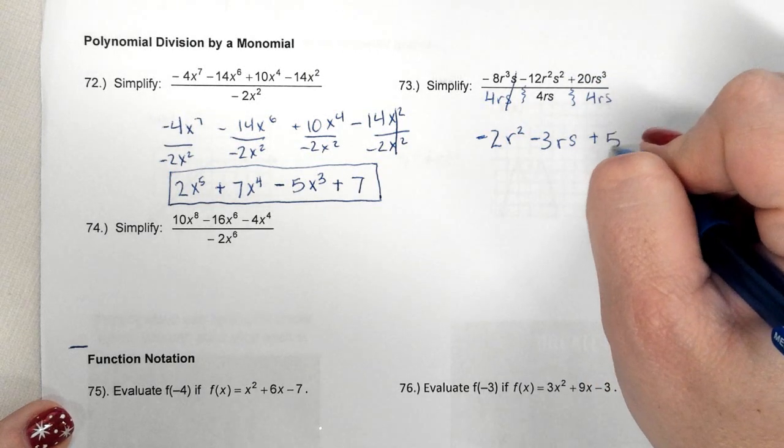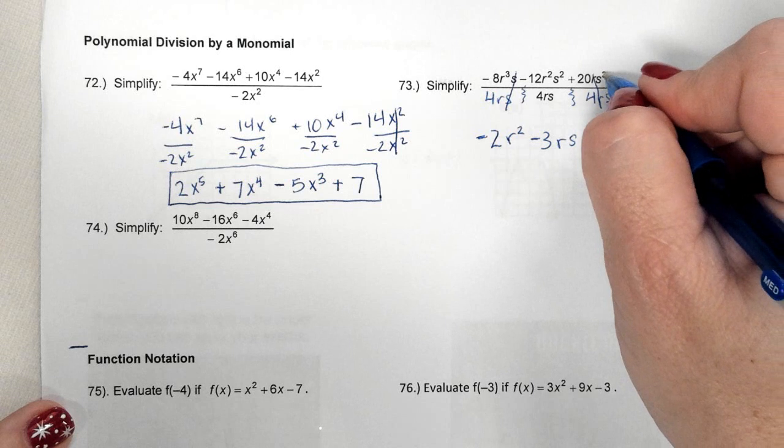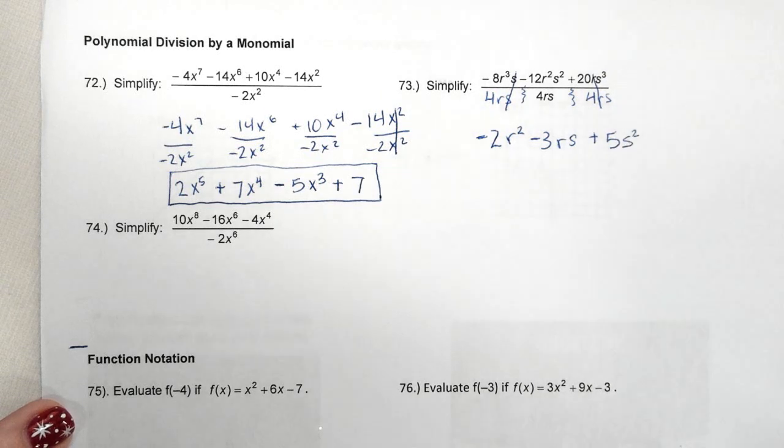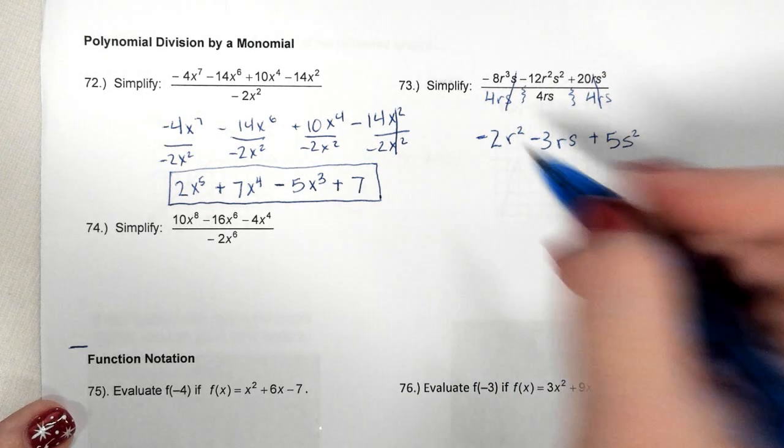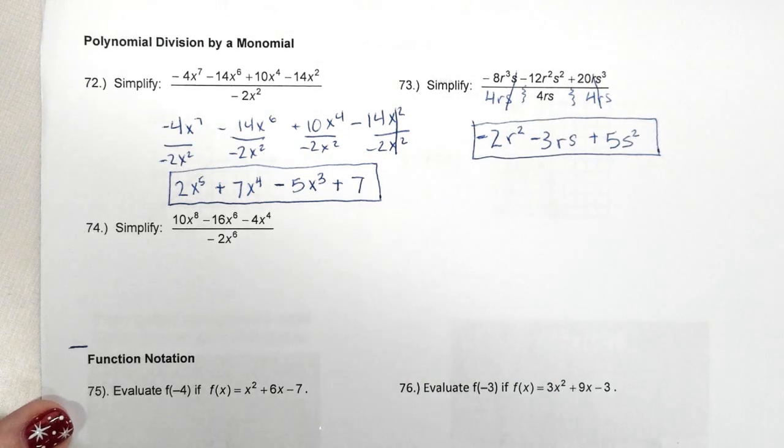Plus 20 divided by 4 is 5. R's cancel, 3 minus 1 is 2. And they're all degree 2, so you don't have to move anything because they're all the same degree.